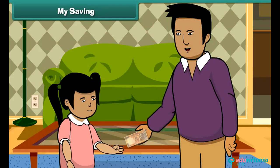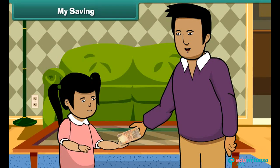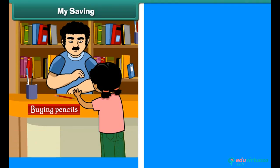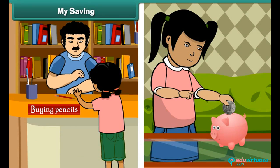Remy's father gave her rupees 10. She spent rupees 2 for buying pencils and the rest she dropped in her piggy bank. The money kept in our piggy bank is called saving.